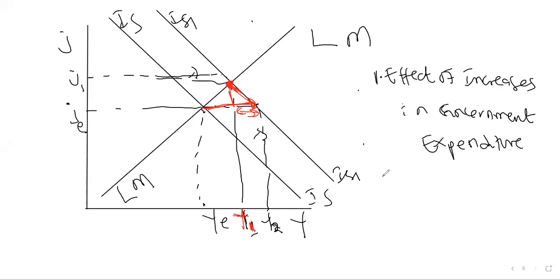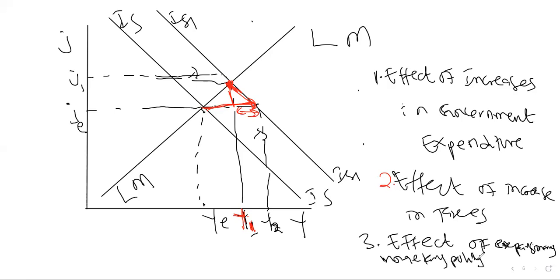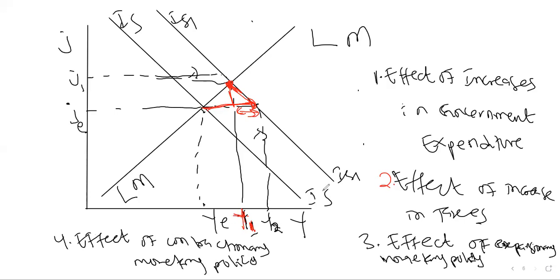What I want you to try: number two, effects of increasing taxes. Number three, effects of expansionary monetary policy. Number four, effects of contractionary monetary policy. Today I've taught you the effect of increasing government expenditure — go and work through these other scenarios.